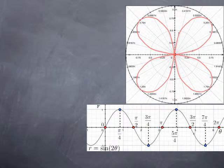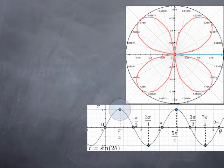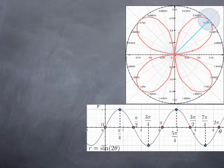Going back to our curve r equals sine of 2 theta, we can clarify the situation of the tangents. In particular, if we look at the case where theta equals zero, we're at the pole, which means the line theta equals zero — pointing in the direction of the positive x-axis — is a tangent line at that point. If we look at what happens for theta equals pi over 4, we are at that point, and if we want to look at the slope of the tangent, we can now make some calculations.